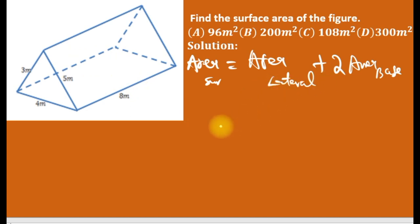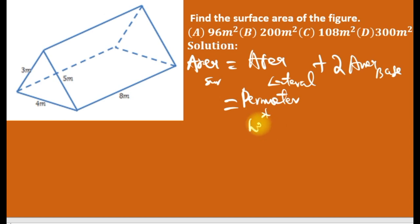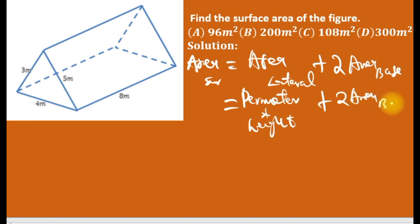The remaining part is called the lateral area. We know that lateral area is always perimeter times height, plus two times the area of the base. In this case, the base is a triangle, so we apply the area of a triangle: half base times height.